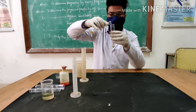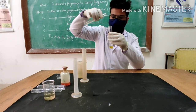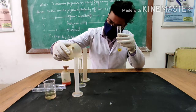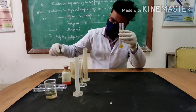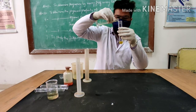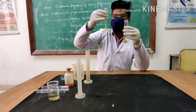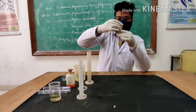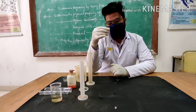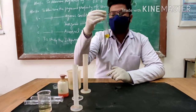Then we will add 1 ml of picric acid solution, followed by 1 ml of NaOH solution. After adding all 3 components, we will mix it thoroughly. The appearance of orange-yellow colour after performing this test confirms the presence of creatinine in the given urine sample.